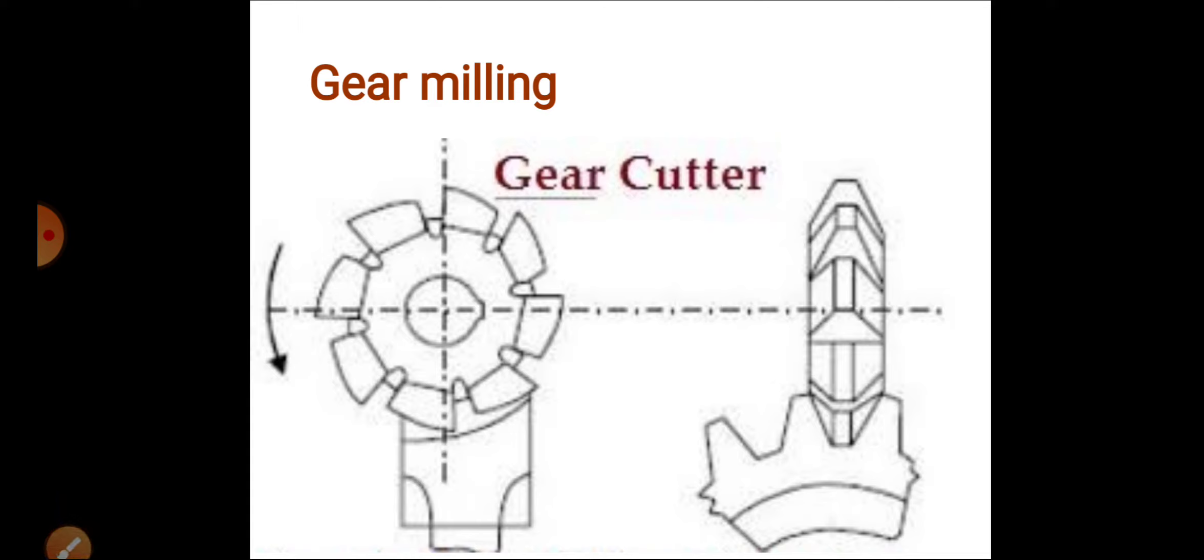Gear milling. The gear milling operation is mainly performed to cut helical or spiral gears. Spur gears can also be cut. Look, this is a spur gear. Spur gear cutting is done with the help of a gear cutter. This is gear milling.